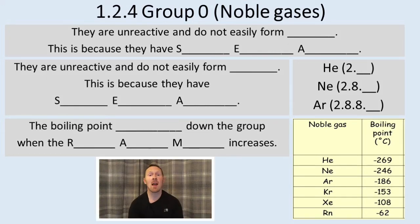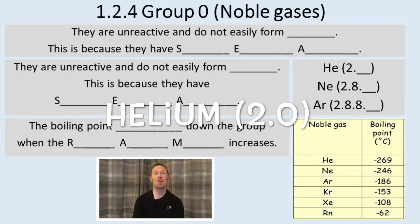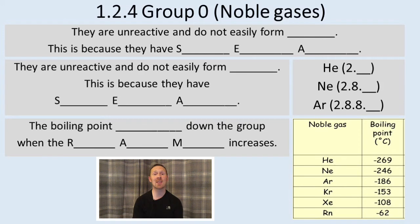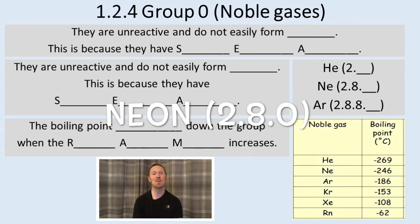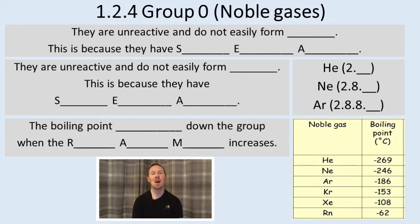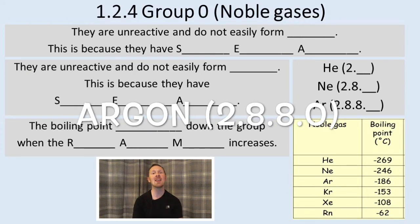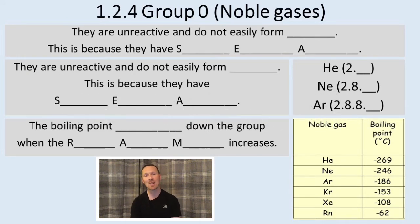So when you consider the electron arrangement for helium, HE, it's 2.0. When you consider it for neon, it's got 10 electrons, so its electron arrangement is 2.8.0. When you consider it for argon with 18 electrons, it's 2.8.8.0.